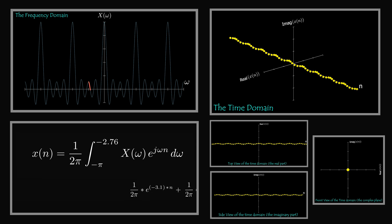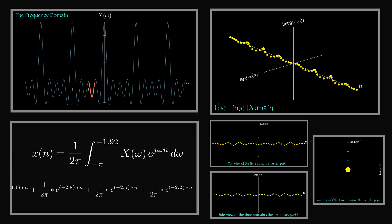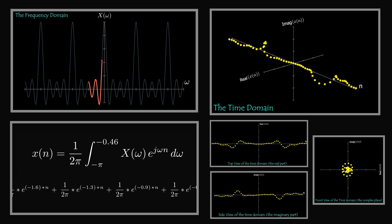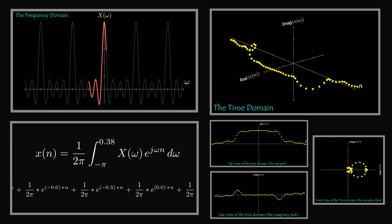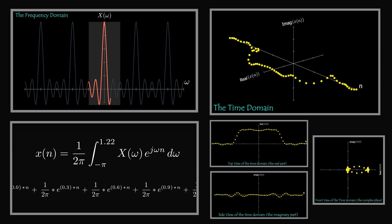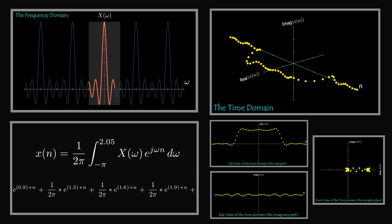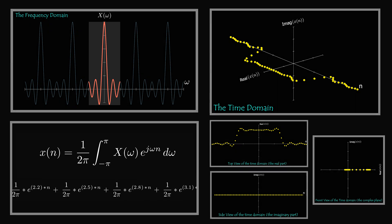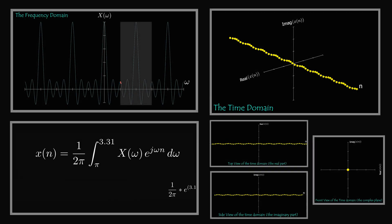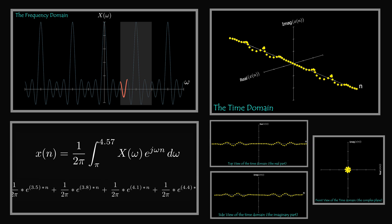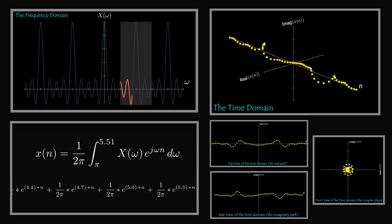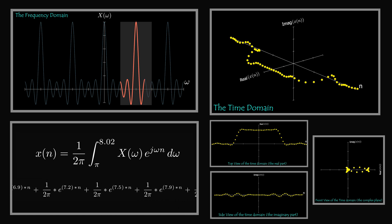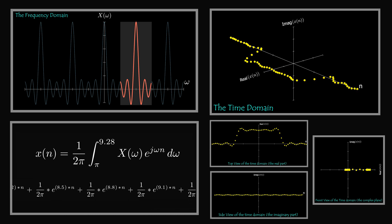Here is another example in which the frequency domain is a periodic sinc function with a period of 2π. A periodic sinc function is also called the Dirichlet function. Since it is periodic over 2π, the corresponding time domain is discrete. To get the time domain, we take any 2π interval and sum all the discrete time complex exponentials in that interval — here we chose minus π to π. Each point in the periodic frequency domain represents a discrete time complex exponential; its magnitude is the value of the function at that point, and its frequency is the frequency at that point.